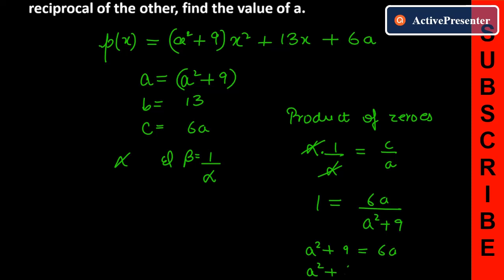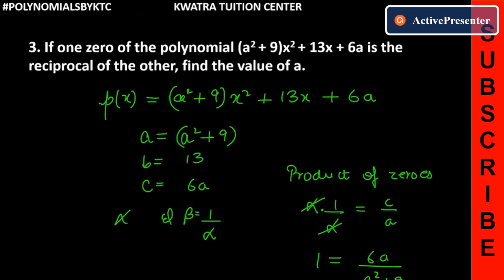So it will be a² - 6a + 9 = 0. So this is our quadratic equation.